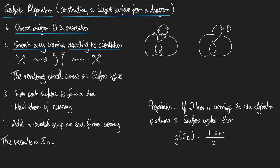The resulting closed curves. Now you see, because I've smoothed every crossing away, the result is just a union of curves. Right? And these resulting curves are the Seifert cycles. So, for this diagram, we got three Seifert cycles.